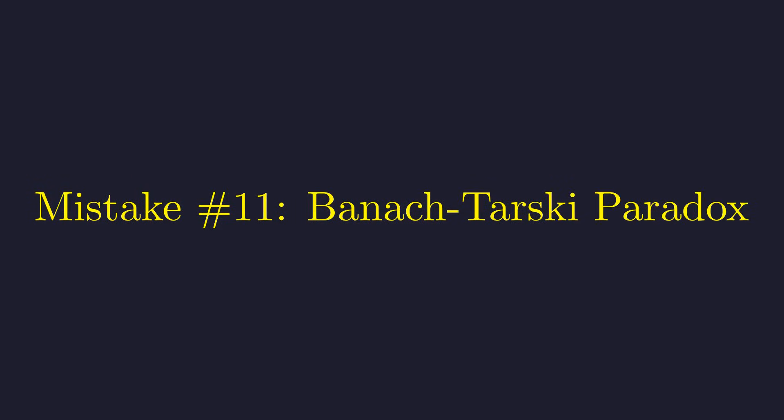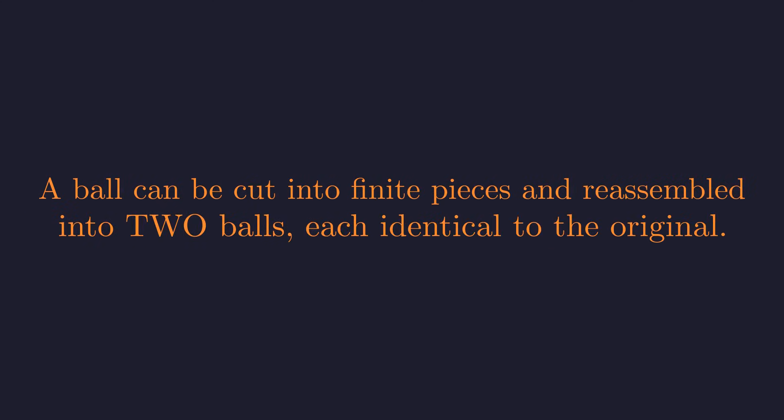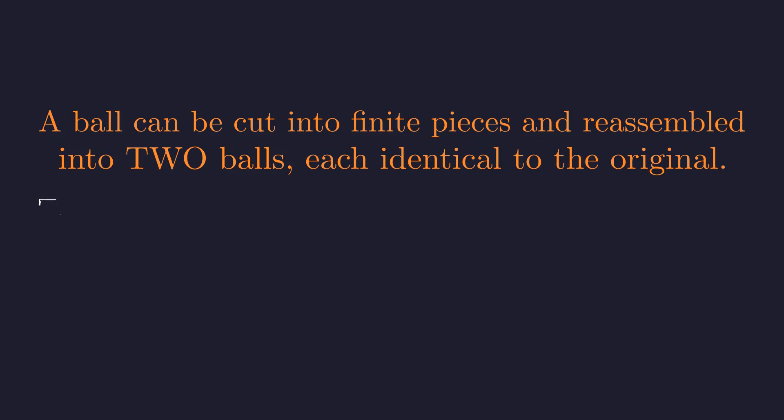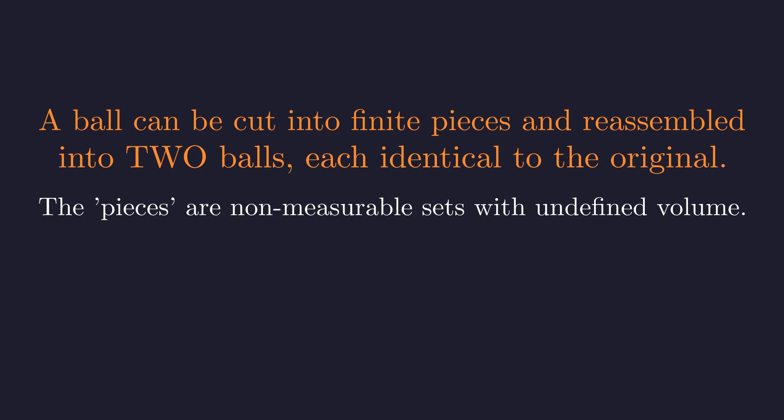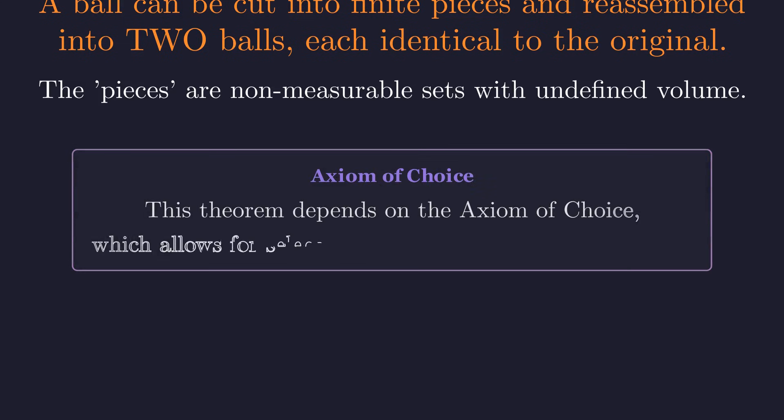This is a mathematically proven theorem so counterintuitive it's often called a paradox. The Banach-Tarski paradox states you can take a sphere, break it into a finite number of pieces, and reassemble them into two new spheres, each identical to the original. The trick is that the pieces are not physical objects—they are infinitely complex point sets that don't have a well-defined volume to begin with. The proof relies on the axiom of choice. The paradox highlights the vast chasm between physical intuition and abstract mathematics.